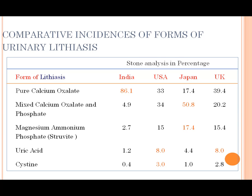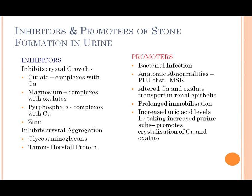Other stone types include cysteine and uric acid, and also magnesium and phosphate struvite. What are the inhibitors for stone formation in urine? Inhibitors include citrate, calcium, magnesium, and pyrophosphate with calcium, and zinc. These are the inhibitors.